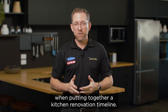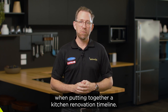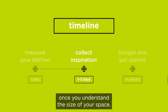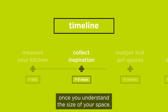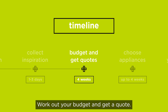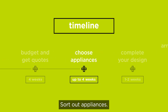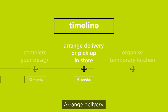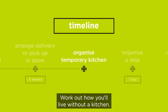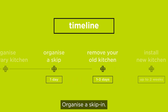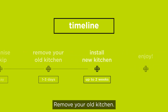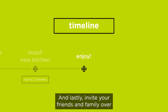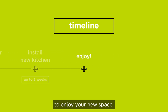Here is a rough guide to follow when putting together a kitchen renovation timeline: measure your kitchen; collect inspiration once you understand the size of your space; work out your budget and get a quote; sort out appliances; complete your design; arrange delivery; work out how you'll live without a kitchen; organise a skip bin; remove your old kitchen; install your new kitchen; and lastly, invite your friends and family over to enjoy your new space.